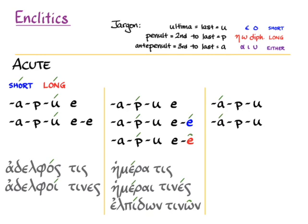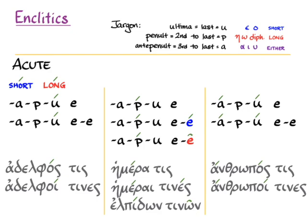If an acute is all the way back on a word — that is to say on the third to last syllable by the regular rules of accent — and it has an enclitic after it, that also feels a little strange for the regular rules of accent. The enclitic will throw back a second accent onto the word. So: 'anthropos tis.' And with a two-syllable enclitic, it does the same thing — 'anthropos tines.' Here the enclitic itself doesn't get its own accent; instead it adds an extra accent back onto the word.